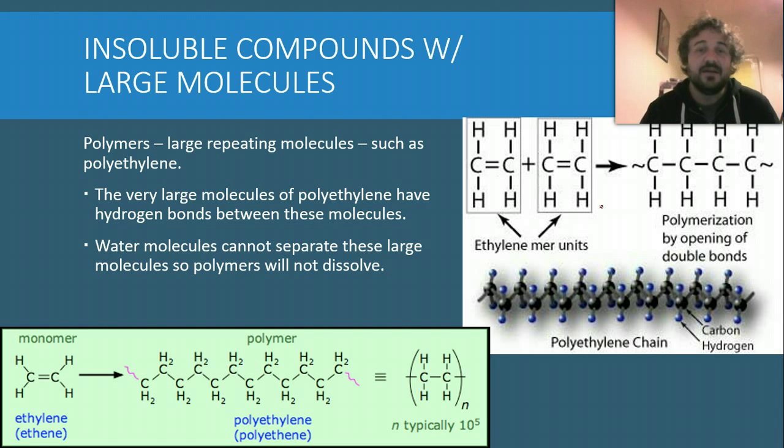Insoluble compounds with large molecules. Sometimes when you have a very large molecule, the water just can't get around it. It's too big. Polymers, so large repeating molecules. The mer is the small subunit. A monomer is this one here, and a polymer is this one here. Each one of these is ethylene, and you can see that it just goes on. It can go on for many, many times, or it can go on for a shorter amount. But they're so big that the water molecules can't separate them, so they don't dissolve.